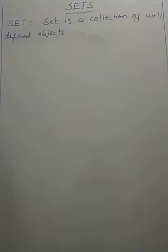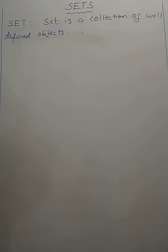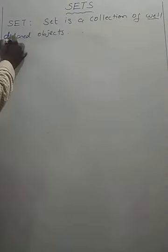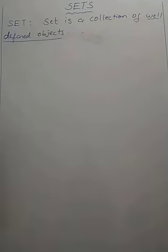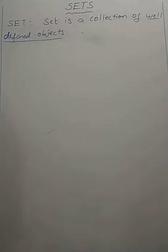Let us first define what is meant by a set. A set is a collection of well-defined objects. Here, object means any living being or non-living being. For example, a collection of boys in your class, a collection of girls in your class, a collection of plants and trees in your school, or a collection of your family members. An object may be a living being or a non-living being.